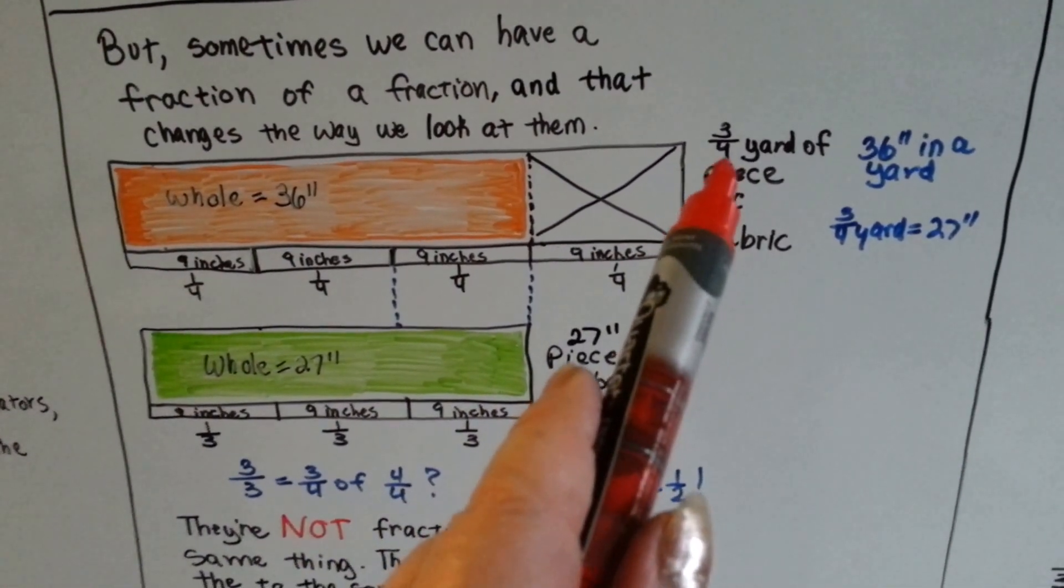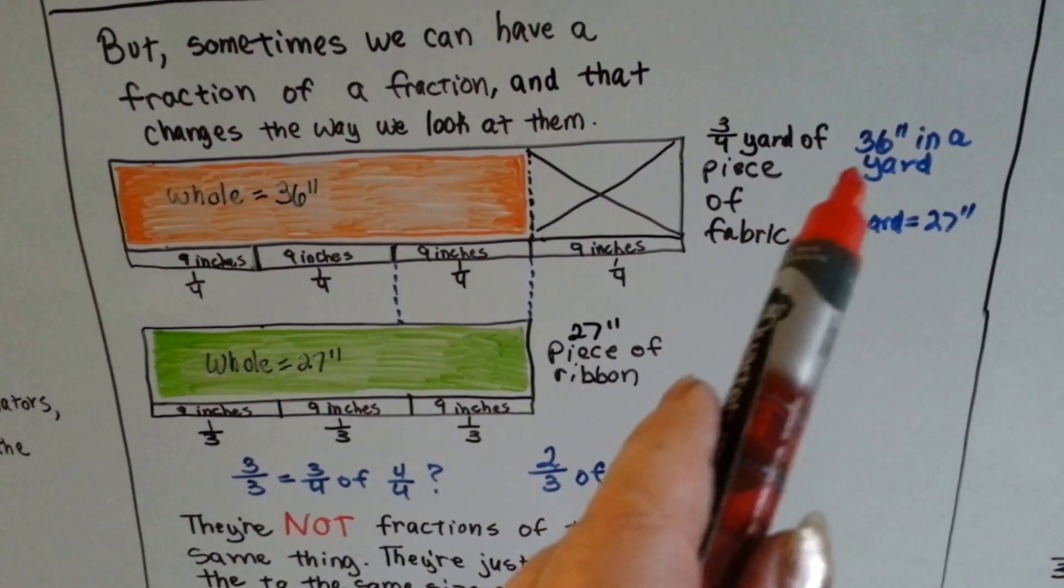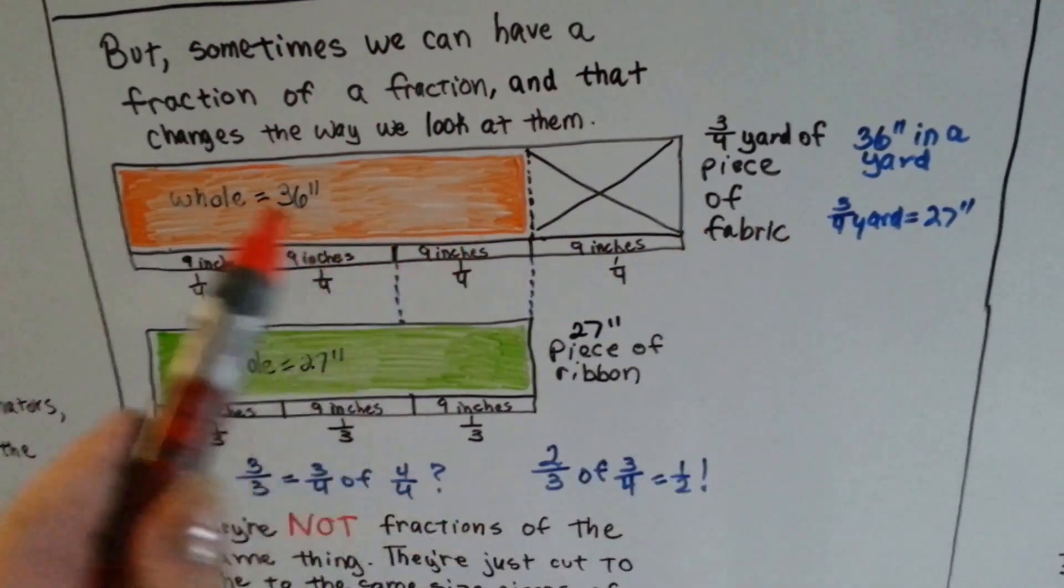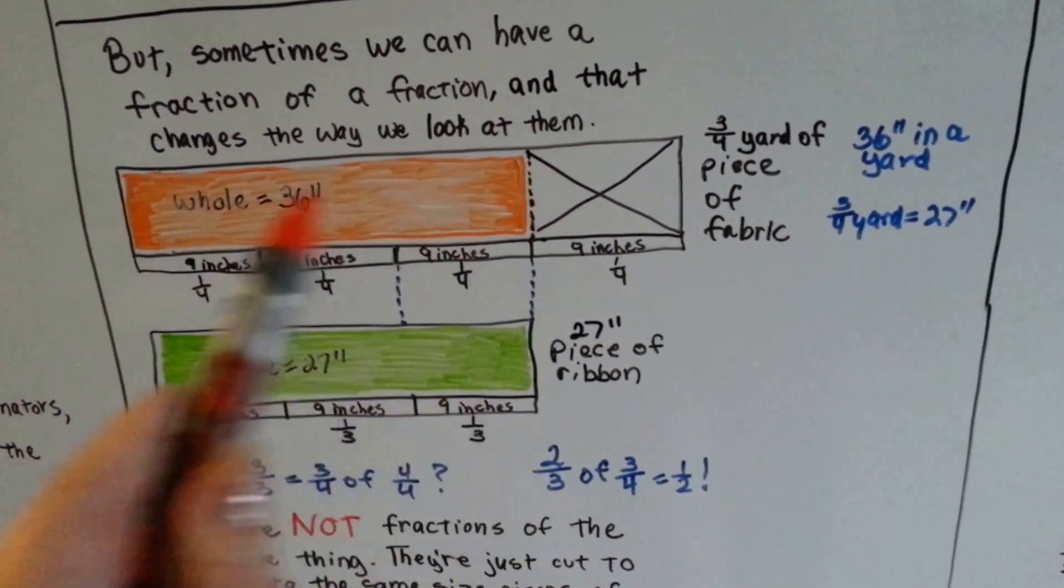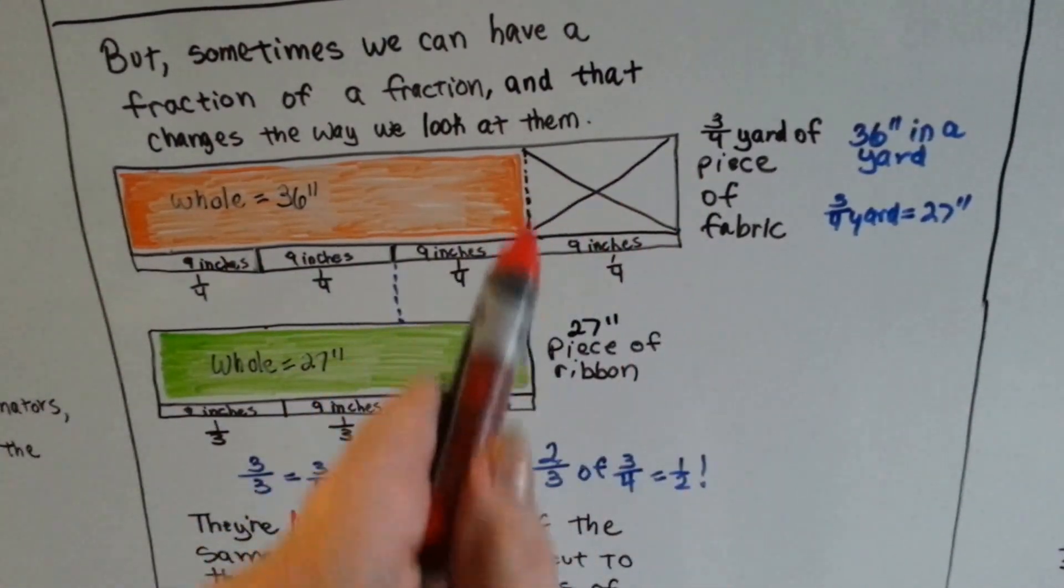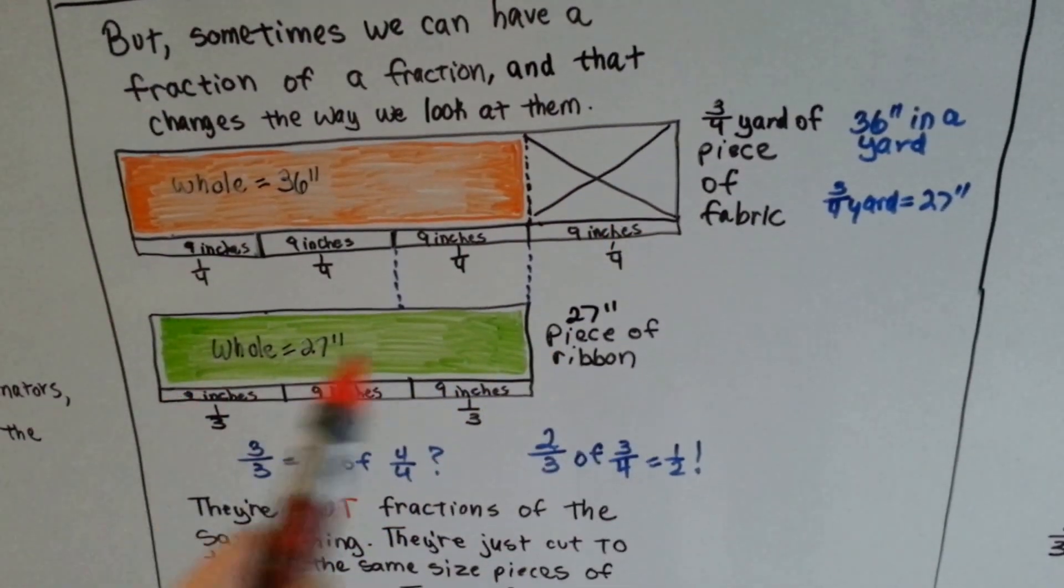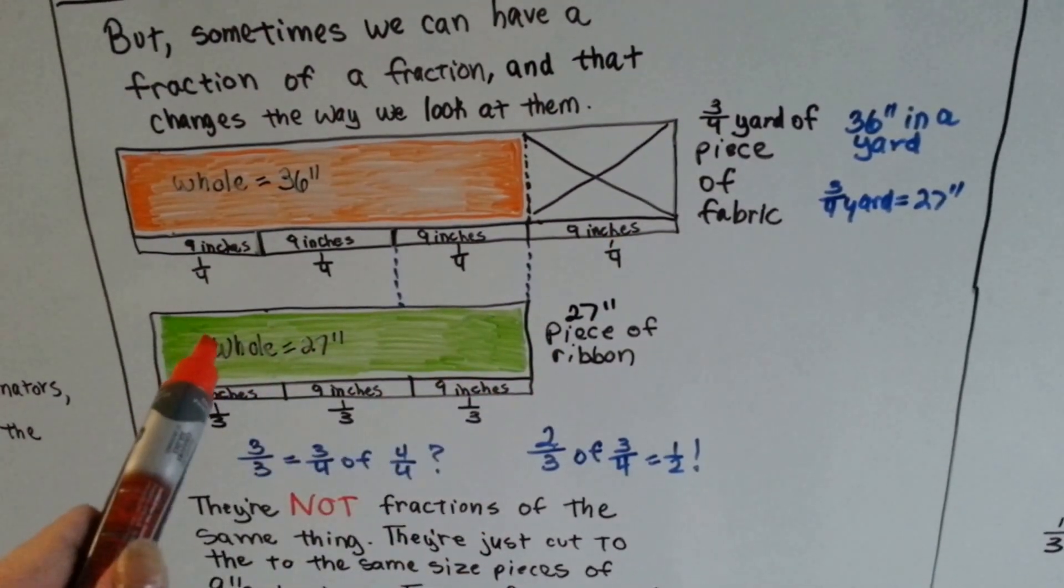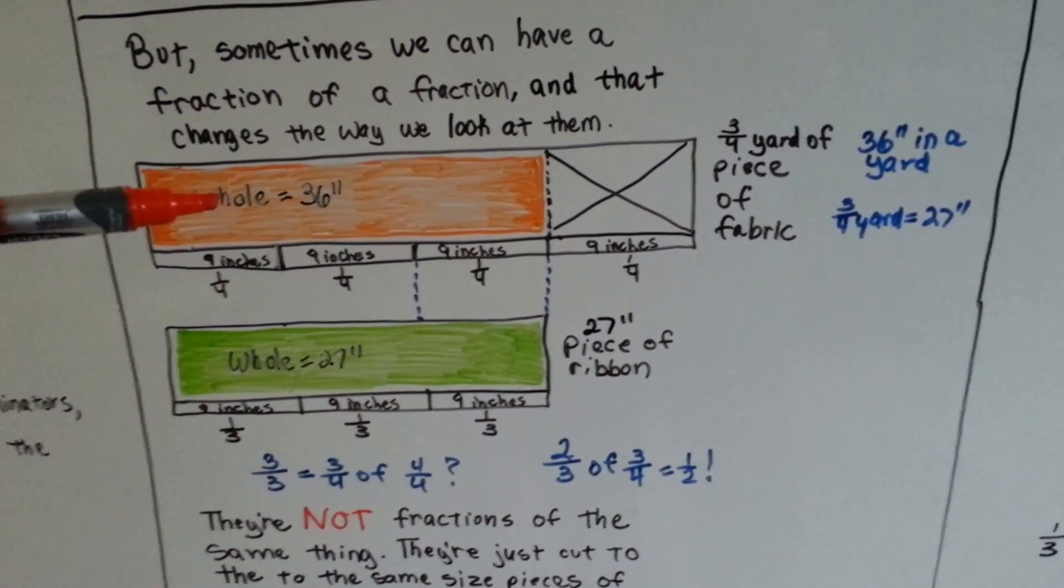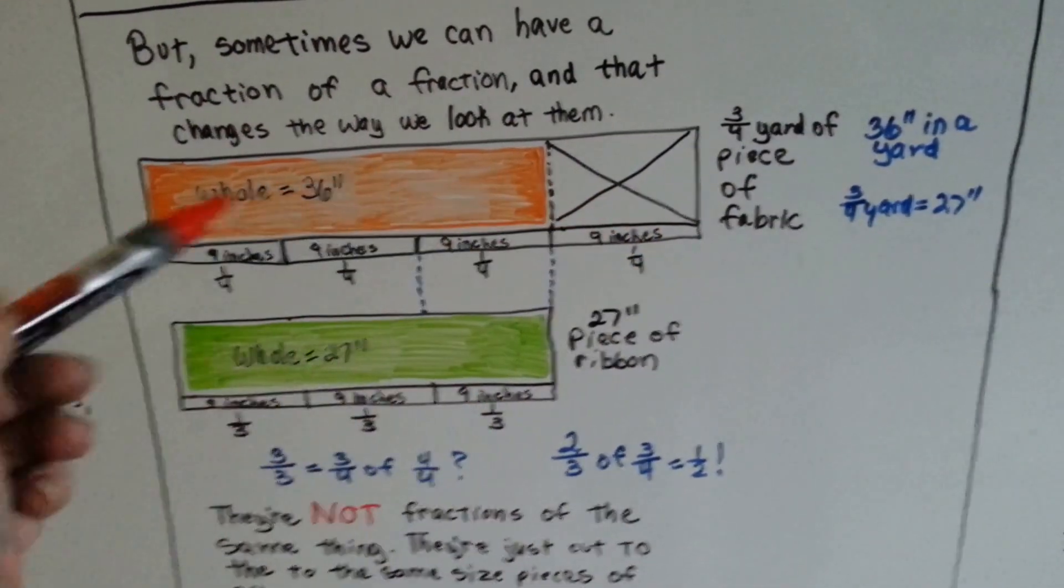If we went to the store and bought three-fourths yard of fabric, 36 inches is a yard. So we bought three-fourths of a yard. We bought 27 inches. So here's the three-fourths yard. Now, the whole thing would have been 36 inches, but we only bought 27 of the 36. We didn't buy this part. We lay it down next to a piece of ribbon that's 27 inches.